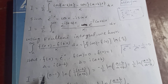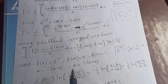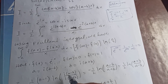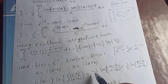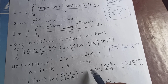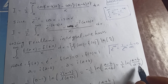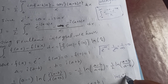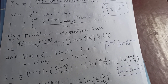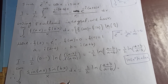Applying the Frullani result: I equals half of [f(∞) − f(0)]·ln(a/b) = half of [0 − 1]·ln(i(a−b) / i(a+b)). The i's cancel, giving minus one half times ln((a−b)/(a+b)). Removing the negative sign by flipping the log argument, we get half·ln((a+b)/(a−b)). Using the log property log(x^n) = n·log(x), our integral from zero to infinity of sin(ax)·sin(bx) over x dx equals half·ln((a+b)/(a−b)).